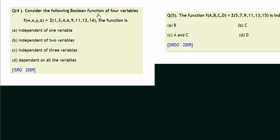Consider the following Boolean function of four variables w, x, y, and z. Function f has the min terms summation 1, 3, 4, 6, 9, 11, 12, 14.